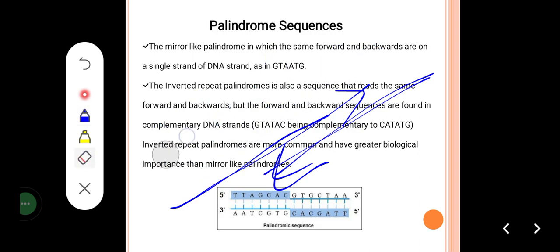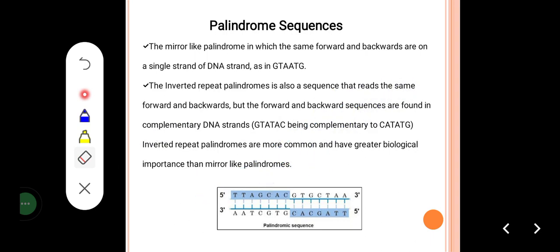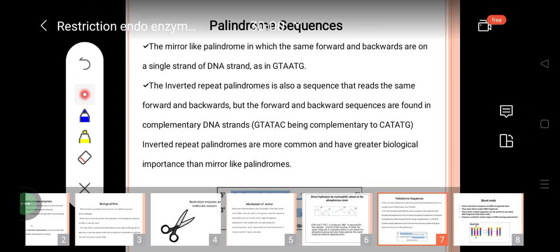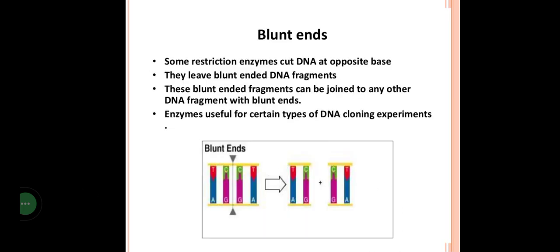A palindromic sequence means the mirror images are the same. Mirror-like palindromes are sequences that read the same forward and backward on a single strand of DNA — for example, GTA and ATG: if you have a mirror image it is the same, ATG. Inverted repeats are also palindromic sequences that read the same forward and backward, with the same symmetry present on both strands.